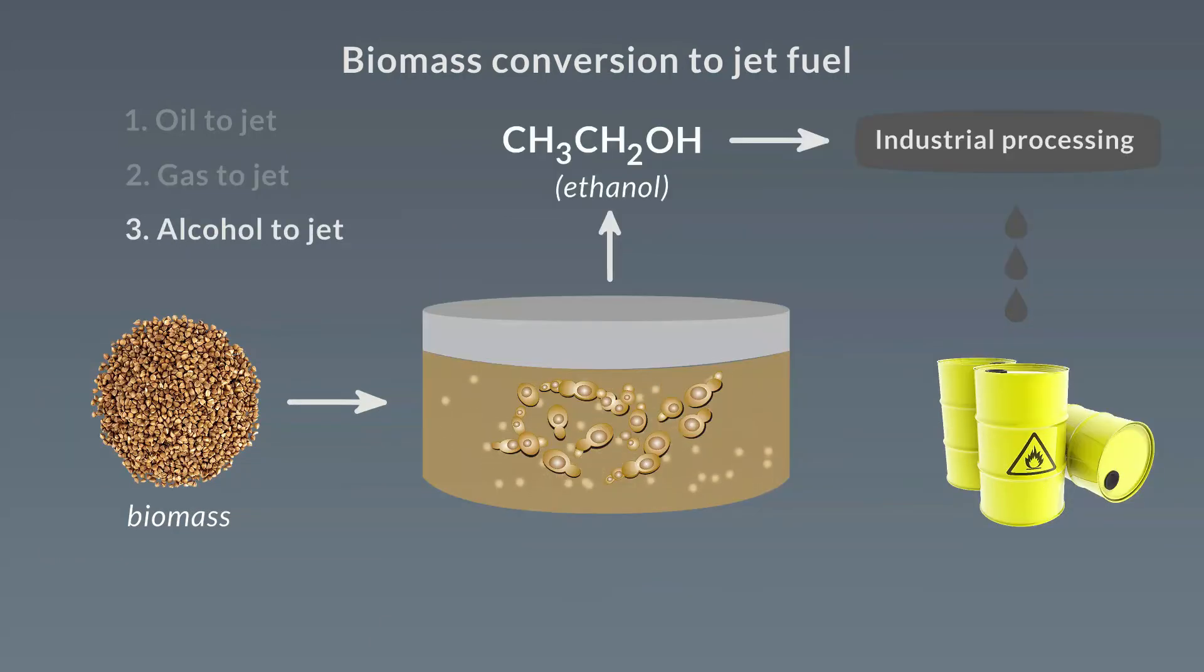The alcohol-to-jet process involves the fermentation of biomass to produce alcohol, such as ethanol. Alternatively, the biomass may first be treated with hydrolytic enzymes to produce sugars, which are then fermented to give alcohols. Several more industrial steps are required to produce jet fuel.